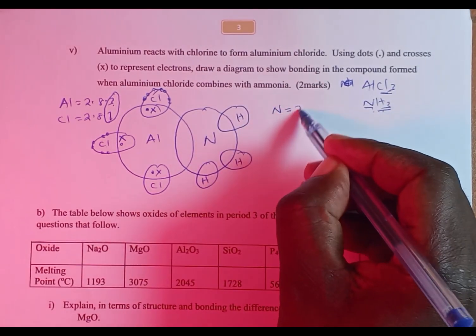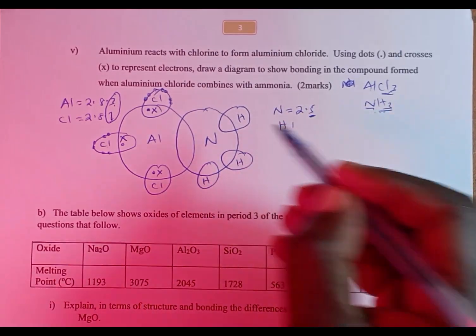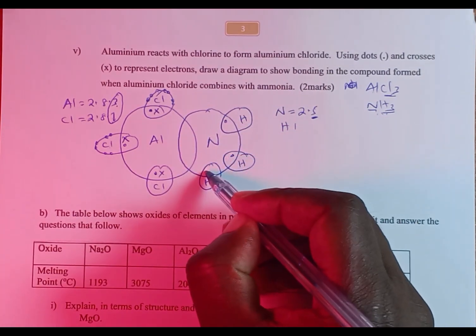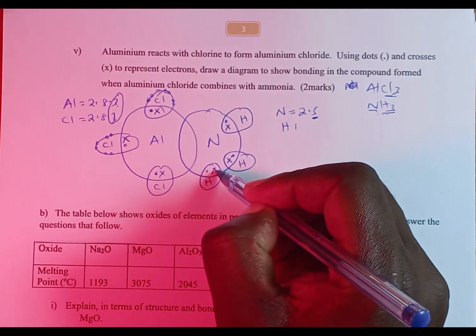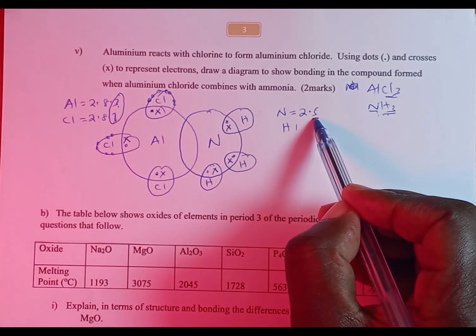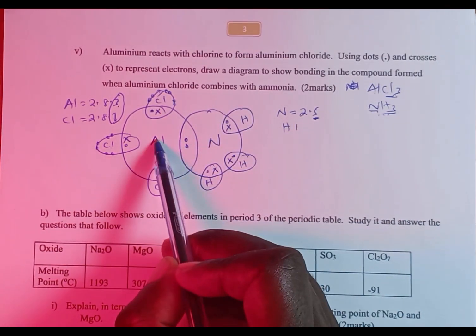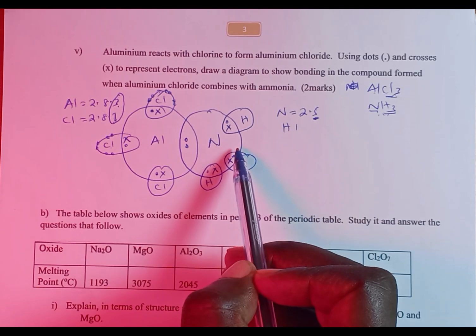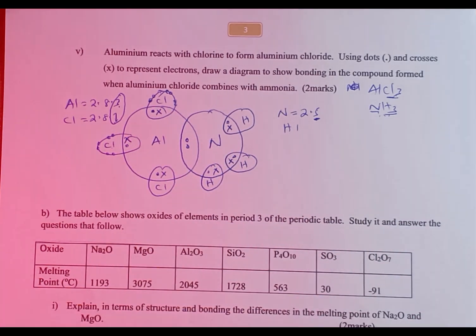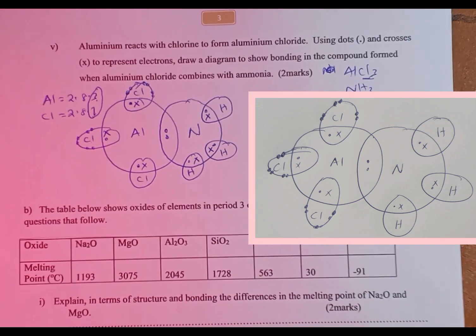For ammonia, nitrogen has atomic number 7 with arrangement 2,5, so we use five valence electrons. Hydrogen has one electron each. Nitrogen donates one electron to each of the three hydrogen atoms, using three of its five valence electrons. The remaining two electrons form an unshared lone pair on nitrogen, making nitrogen satisfied with eight and each hydrogen satisfied with two. That is how bonding occurs when aluminium chloride combines with ammonia.